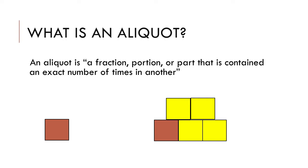First, we need to know what an aliquot is. An aliquot is defined as a fraction, portion, or part that is contained an exact number of times in another. For example, if we put 5 mg of a drug into a total mixture of 25 mg, we have an aliquot of the drug that is one-fifth of the total mixture. This can be seen in the picture as the red block, which is an aliquot that's one-fifth of the total mixture on the right of 5 blocks.